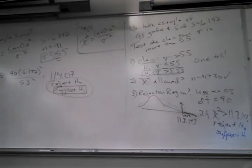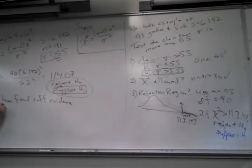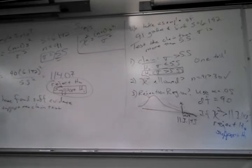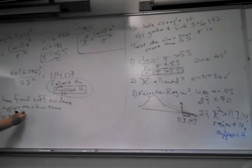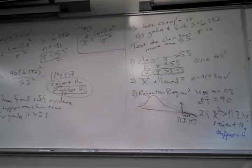The language for the conclusion goes with your claim. There's never any ambiguity - you don't just guess. We have found sufficient evidence to support the claim that sigma for grades is more than 5.5. We need to use English if you don't want to use math notation. I'm still kind of excited about 114 versus 113 - I can't win any money with that, it's not the lottery, but it's kind of neat.